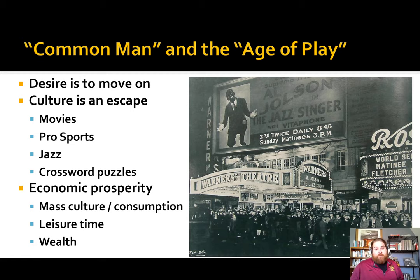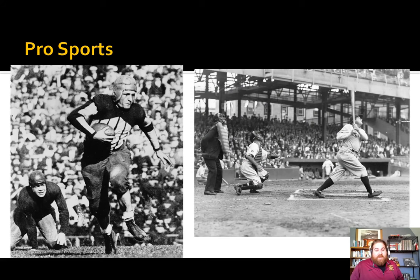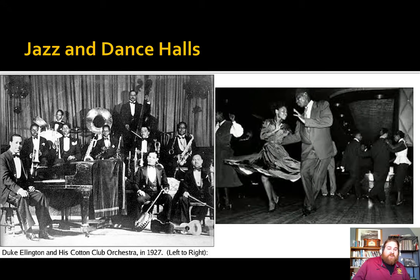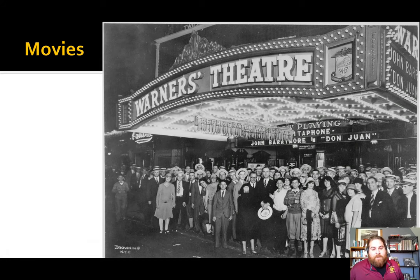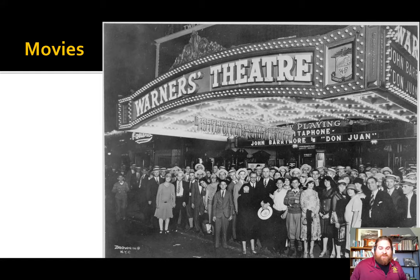The first pro sports leagues are being founded. Dance halls like the Aragon Ballroom and the Cotton Club are playing jazz and dance music with people going out in their hundreds to enjoy it. There are lines around the block for movies — John Barrymore, same family as Drew Barrymore. Film stars are born and Americans still love the movies.